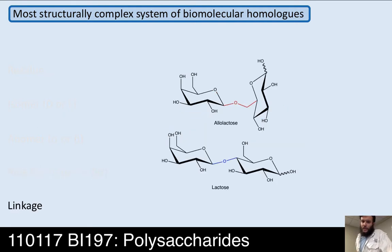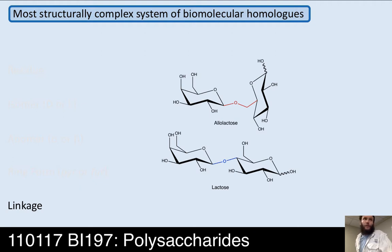And then there are linkages. Allolactose is beta-1,6, and lactose — which is beta-1,4, milk sugar — and allolactose was the effector of the lac operon that turned on the genes in E. coli that enabled babies to absorb lactose. So you can have all kinds of different linkages: alpha or beta, at positions 1,2,3,4, and carbon-6 in the pyranose form.